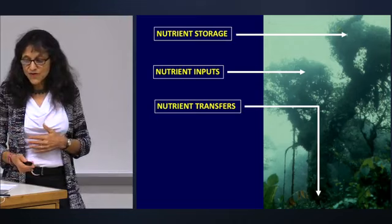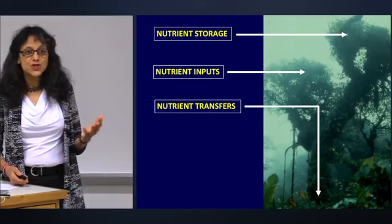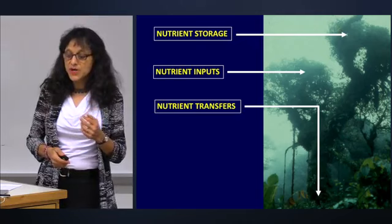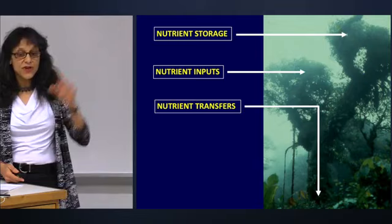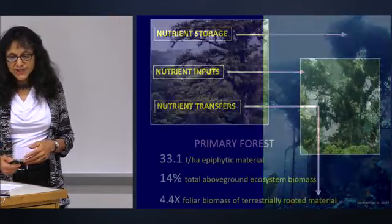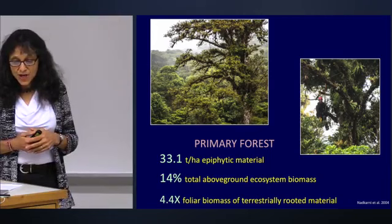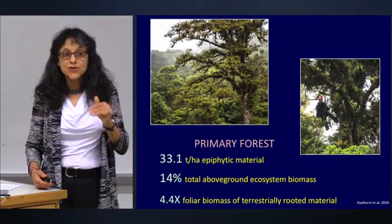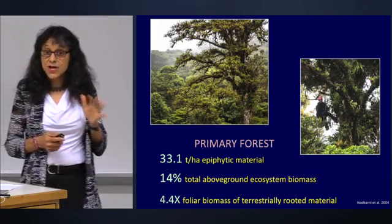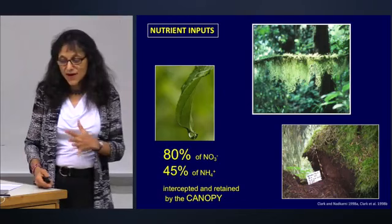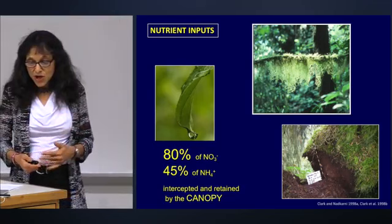Much of my early work was purely descriptive. My students and I climbed into trees, cut branches, and lowered them to the forest floor to get ecosystem-level estimates of biomass and nutrient capital held in forest canopies. In the tropical montane forests of Monteverde, there are about 33 metric tons per hectare of epiphytic material — about 14% of total above-ground forest biomass. Remarkably, epiphytes have 4.4 times the total foliar biomass of the host trees themselves.